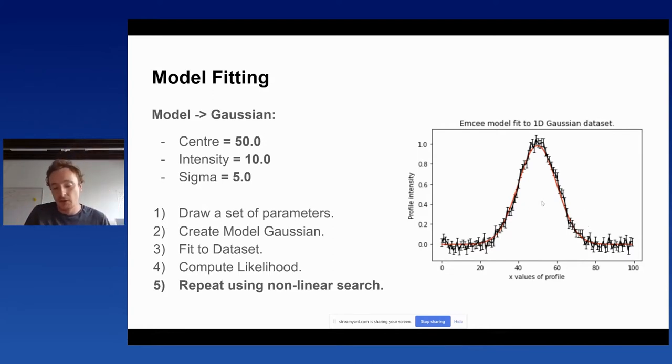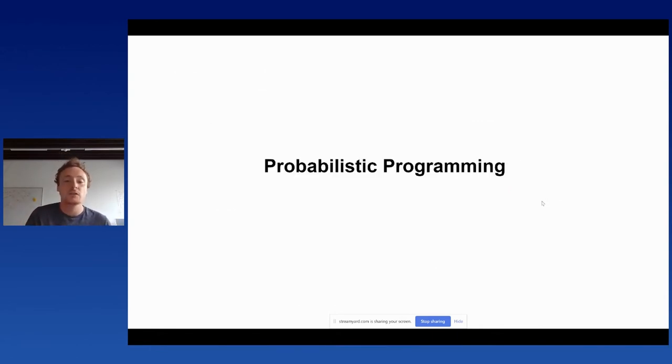So here you can see we've got a center of 60 and so on. I would then use these parameters to create a model Gaussian. This is the Gaussian that corresponds to these parameters. You can see it's centered on a value of 60. But I wanted to really start at the beginning. So we're all on the same page about what probabilistic programming languages do and therefore what PyAutofit does.